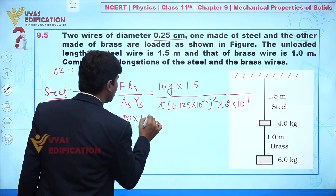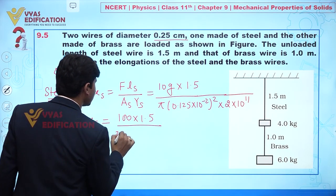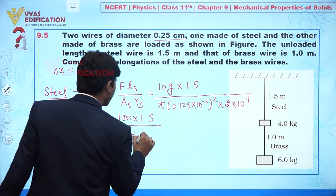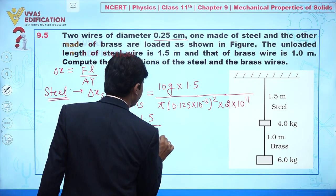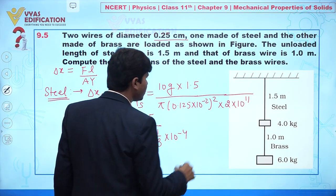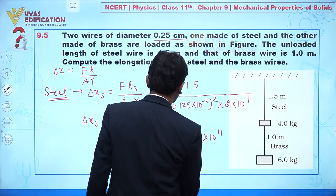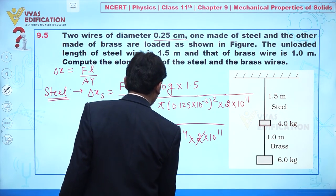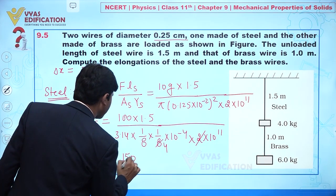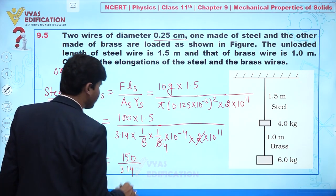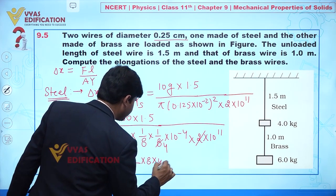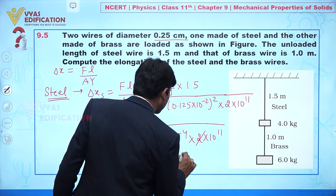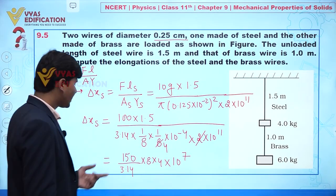So delta x is given by 100 times 1.5, divided by 3.14 times 0.125 squared times 10 to the power minus 4 times 2 times 10 to the power 11. Note that 0.125 equals 1/8, so we get 150 divided by 3.14, and this simplifies further with 8 times 4 times 10 to the power 7.